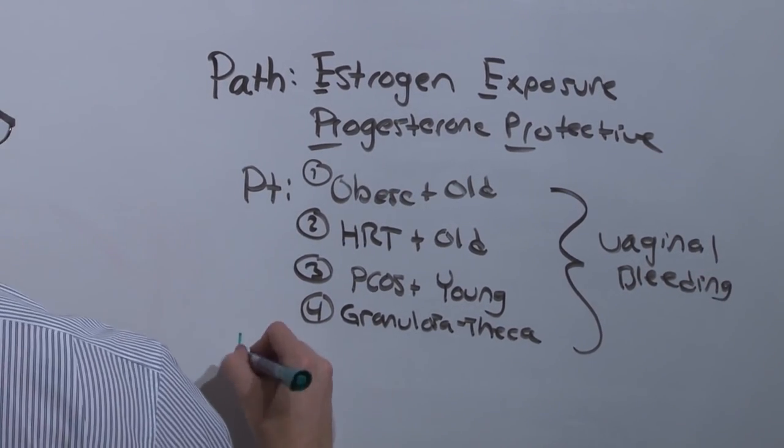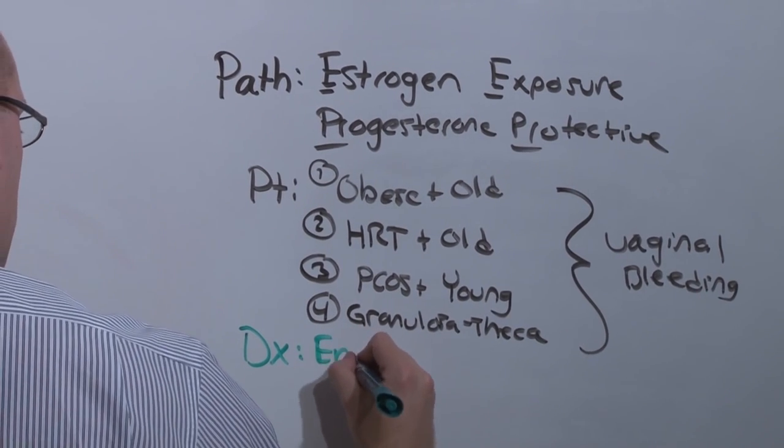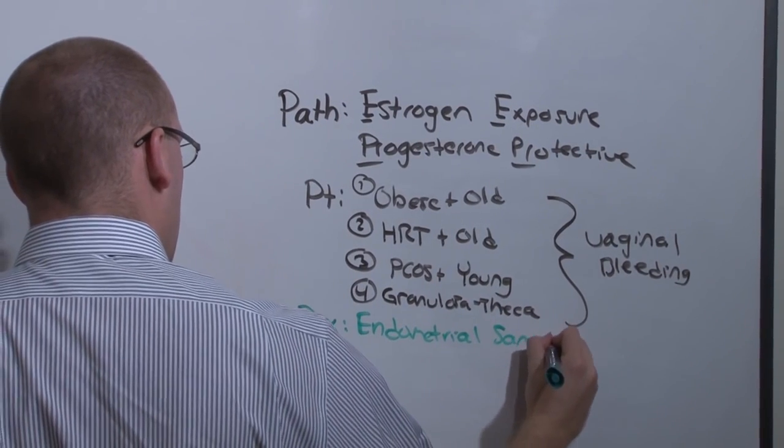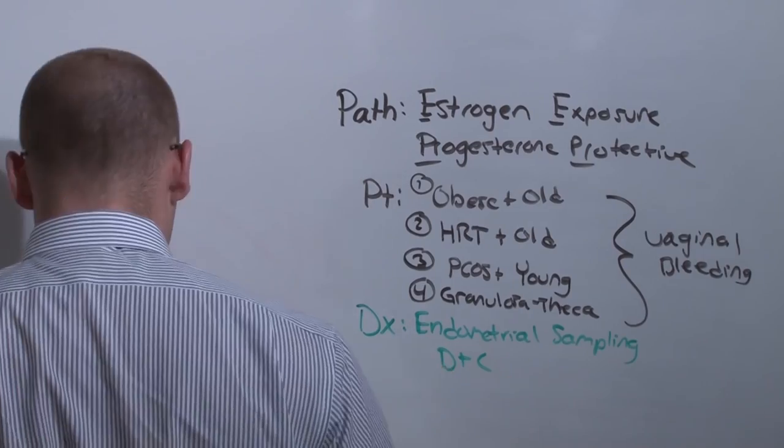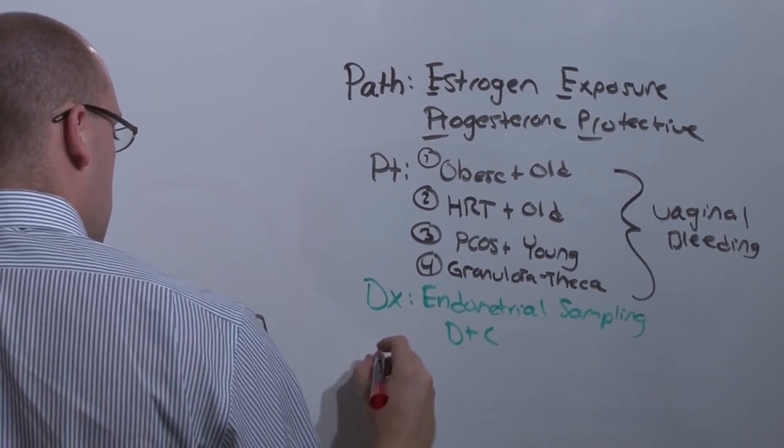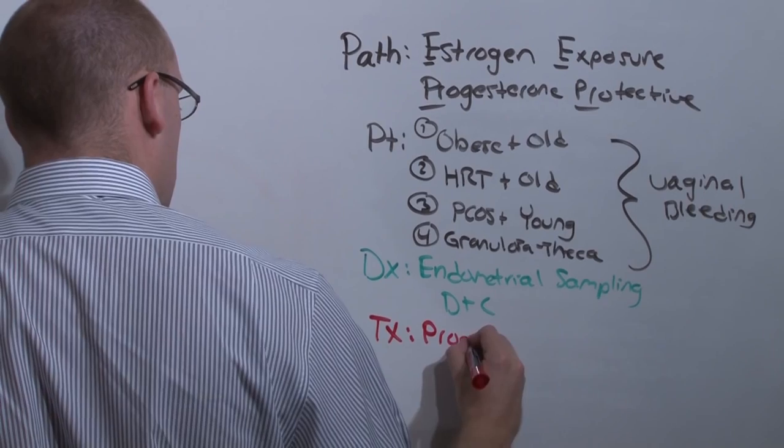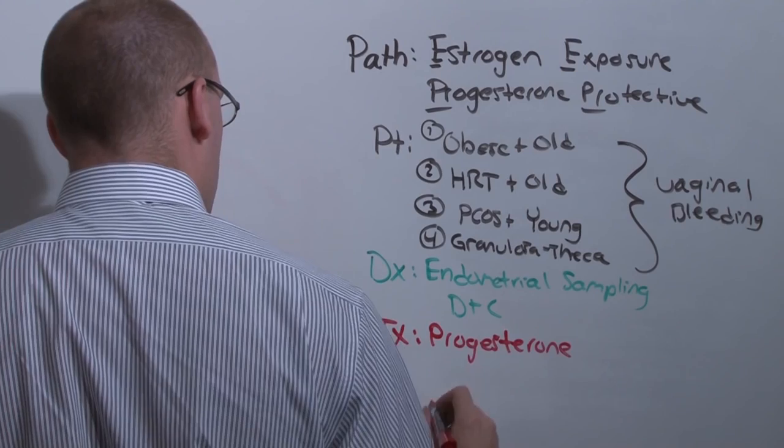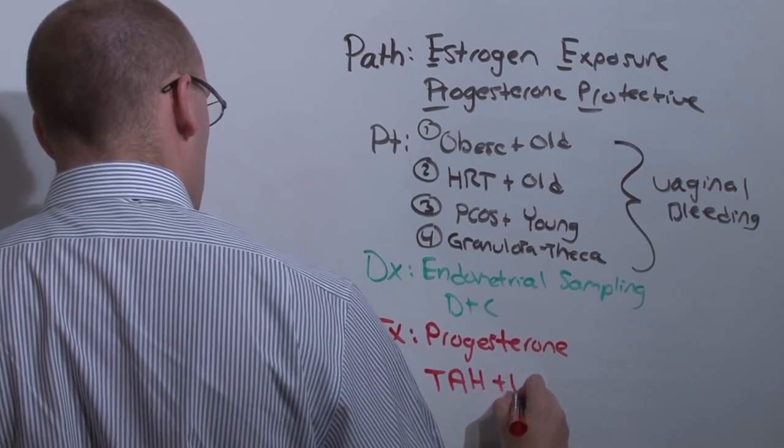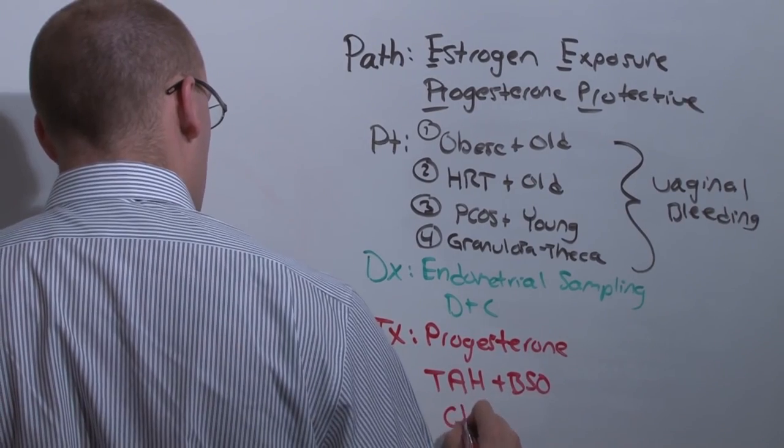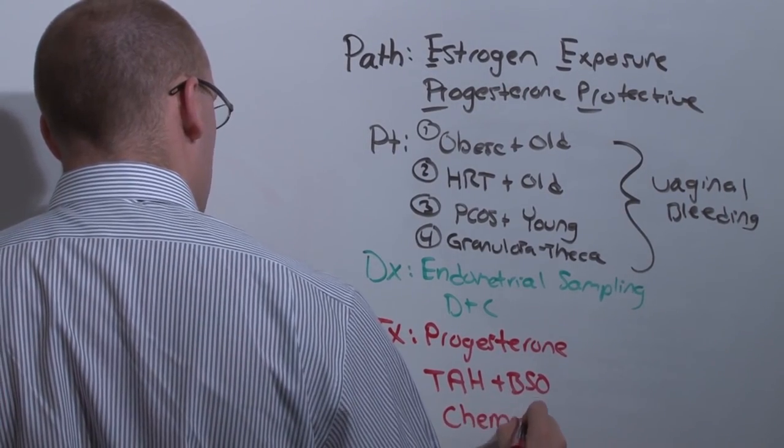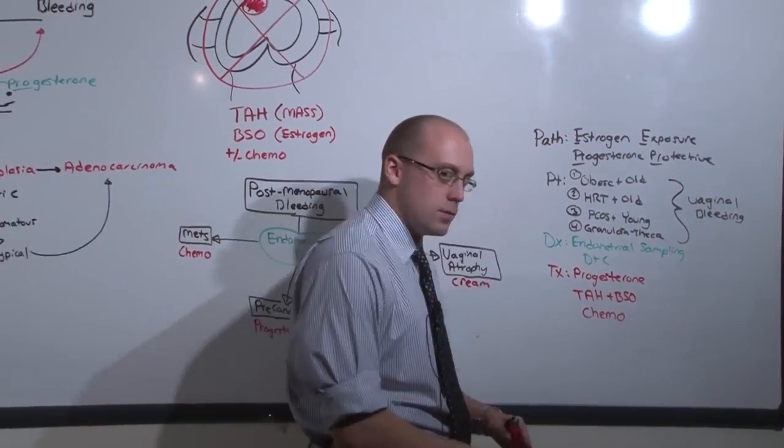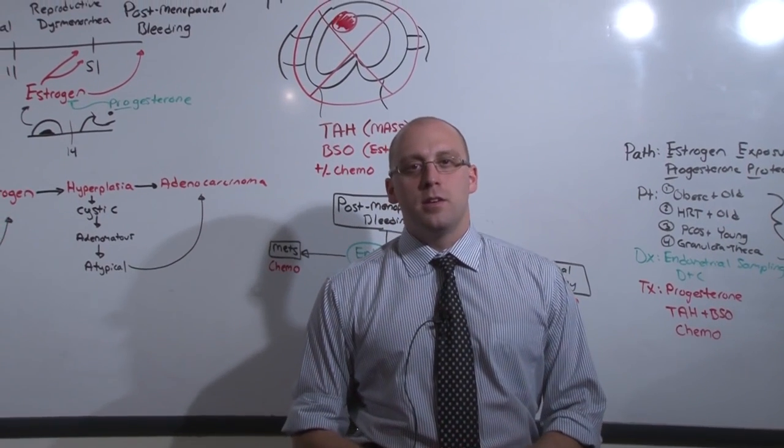The diagnosis is made by sampling the endometrium, dilation and curettage. And the treatment is dependent on the stage. You can use progesterone to reverse hyperplasia. But most of these cancers will require total abdominal hysterectomy, bilateral salpingo-oophorectomy, and if there are metastases, use chemo. And that is endometrial cancer.